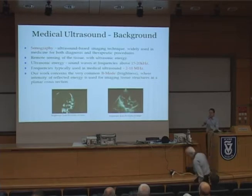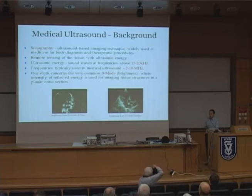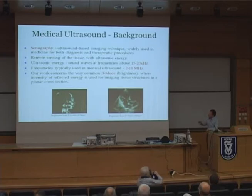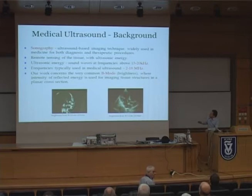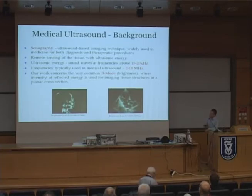There are several modes of ultrasound imaging. You may be familiar with the Doppler mode, where we try to recover velocities of scattering elements in the body such as blood. In our case, we focused on a very specific and common mode known as B-mode, or brightness mode imaging, where we exploit the intensity of reflected energy to image tissue structures in a planar cross-section. This method is also extended to three-dimensional volumes.